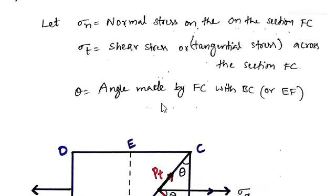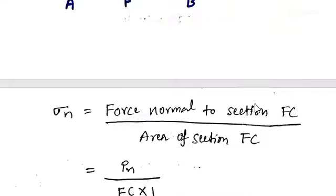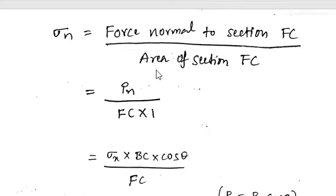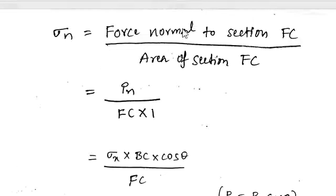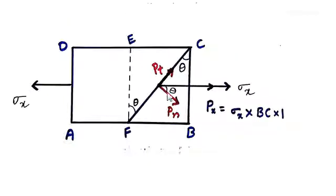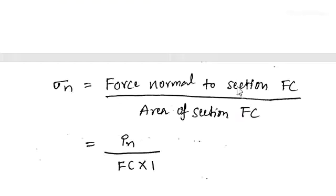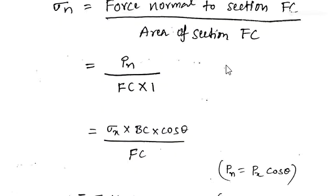We have taken a rectangular member of uniform cross section and unit thickness. Sigma_x is the normal stress acting, sigma_n is the normal stress on FC, and sigma_t is the shear or tangential stress on FC to be found. Theta is the angle made by the oblique section with BC or EF. To find sigma_n — the normal stress on oblique section FC — we use stress equals load by area, so we take the force perpendicular to FC (which is P_n) divided by the area of section FC, which is FC into 1.